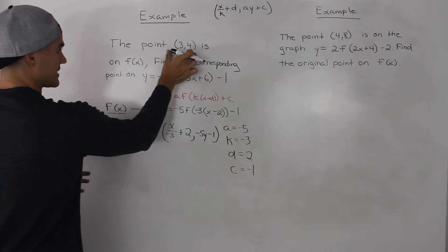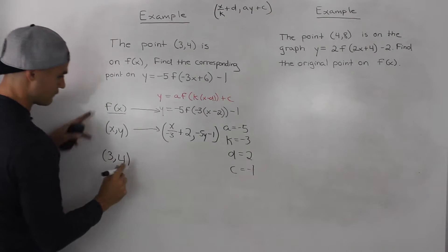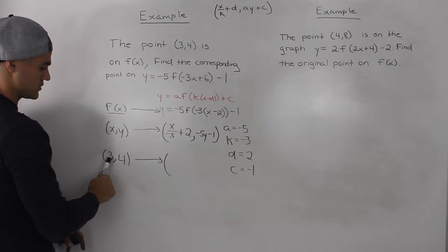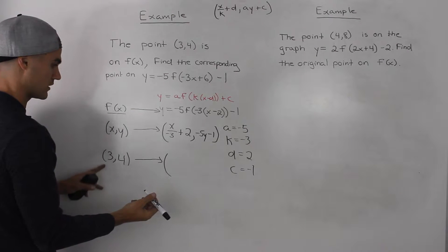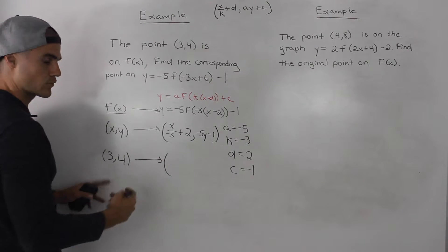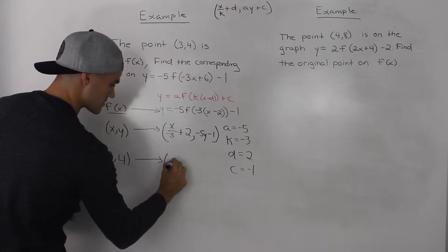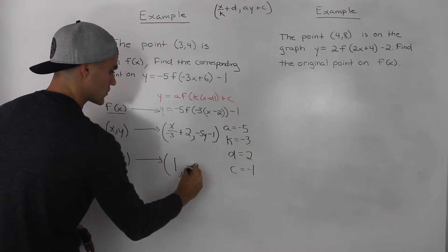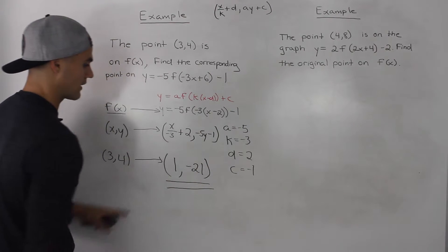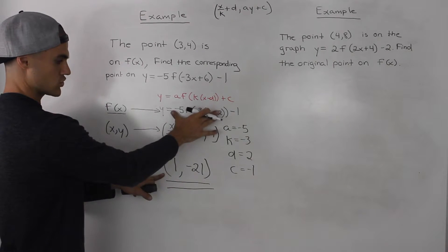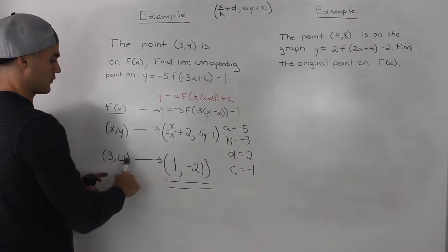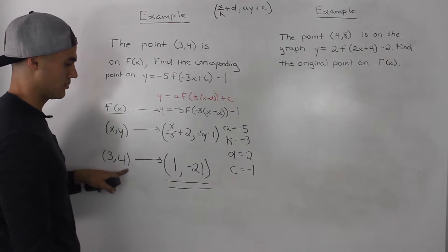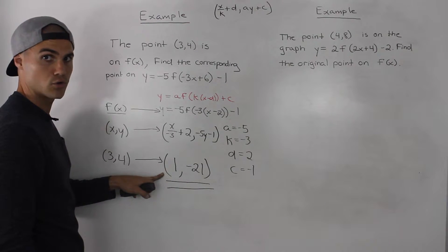They said the point (3, 4) is on the original function f(x), and we have to transform it to get the new point on the transformed function. We take the x and y values and plug them into the formula. So 3 divided by negative 3 is negative 1, and negative 1 plus 2 is positive 1. Then negative 5 times 4 is negative 20, and negative 20 minus 1 is negative 21. So our final answer is the point (1, negative 21) — that's the corresponding point on the transformed function.